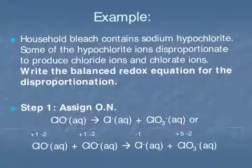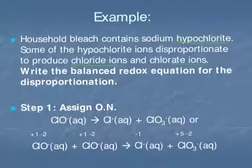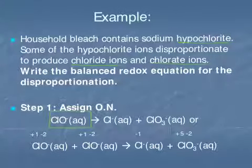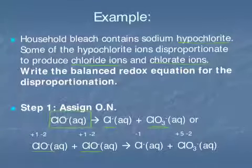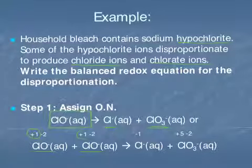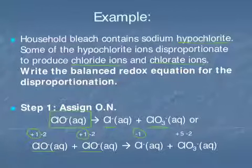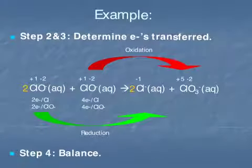Let's look at an example: household bleach contains sodium hypochlorite, and some of these ions disproportionate into chloride ions and chlorate ions. We have ClO⁻ (hypochlorite) reacting to give chloride ions and chlorate ions. We write 2 molecules of ClO⁻ on the reactant side. Our first step is to assign oxidation numbers: the oxidation number for chlorine on the reactant side is +1; in chloride the oxidation number is −1, and in chlorate the chlorine has an oxidation number of +5.